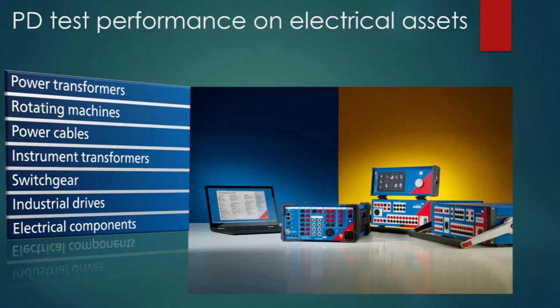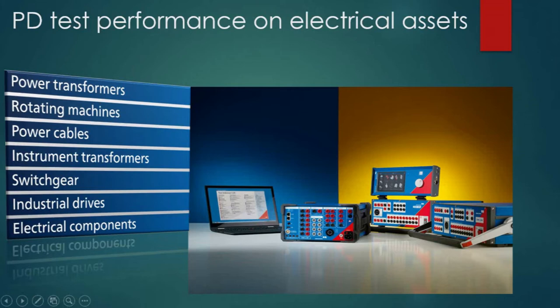Partial discharge testing applies to power transformers, rotating machines, power cables, instrument transformers, switchgear, industrial drives, and electrical components. This video will focus only on power cables, but the overall view shows that PD measurement can be performed across all these electrical assets in the power industry.